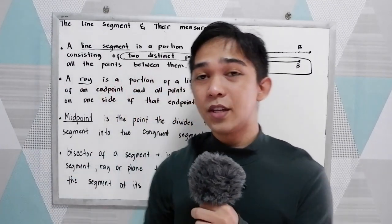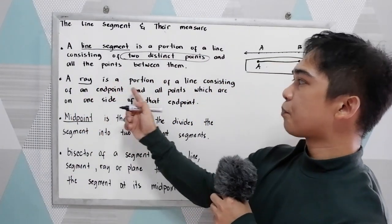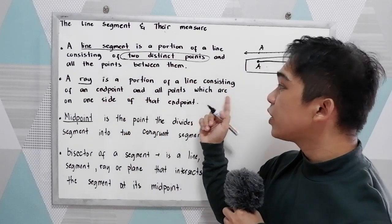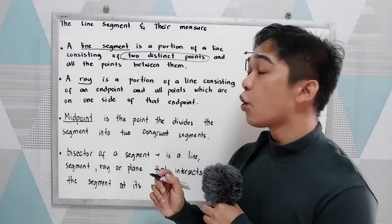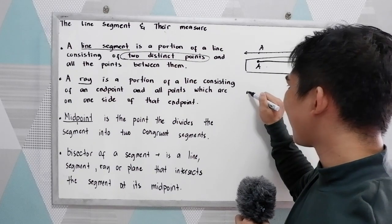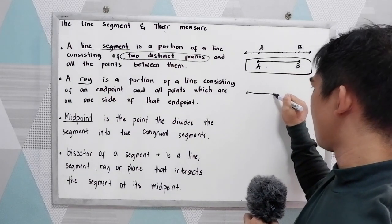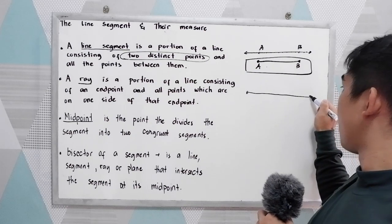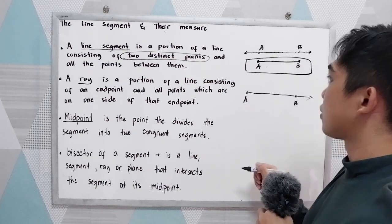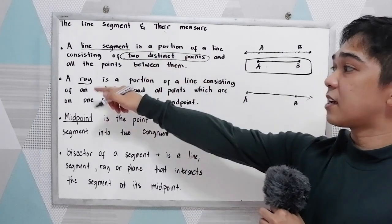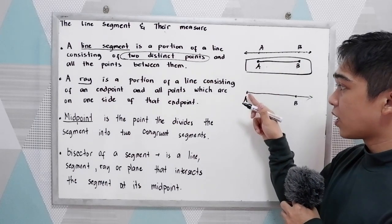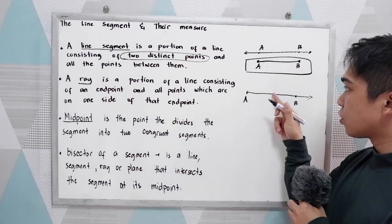Next, a ray is a portion of a line consisting of an endpoint and all points on one side of that endpoint. So we have one endpoint, then an infinite portion of the line — let's say we have point A here. Notice the difference between a line segment and a ray: in a line segment we have two endpoints, but in a ray we have only one endpoint and it extends to infinity.